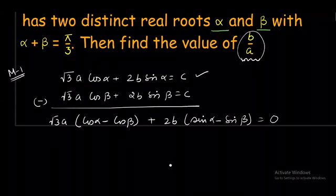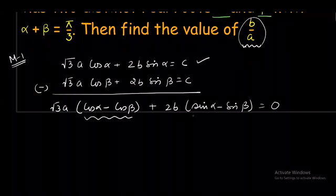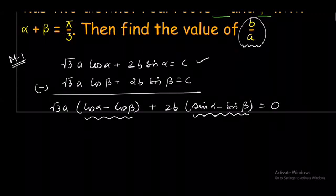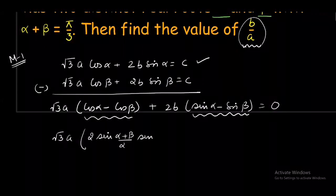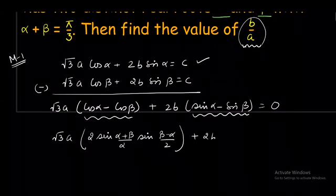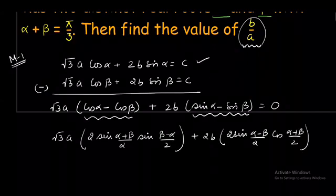What we are going to do next, obviously the understood step is, cos α - cos β and sin α - sin β values I am going to put here. So I am putting the values √3a. This will become 2sin(α+β)/2 sin(β-α)/2. And similarly, use the formula for sin α - sin β, which gives me 2sin(α-β)/2 cos(α+β)/2.